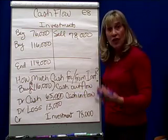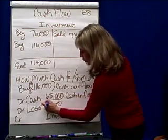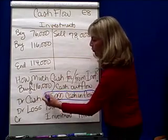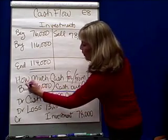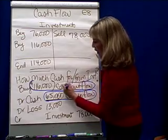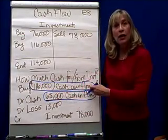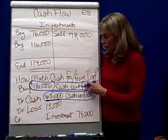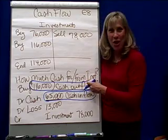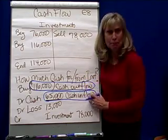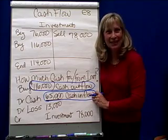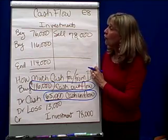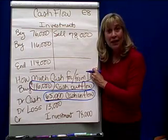So when we do the statement of cash flows, we're going to show $65,000 as a cash inflow, and we're going to show $116,000 as a cash outflow, as far as our investing activities are concerned. Cash in, cash out — more cash is going out than coming in. So the next thing we're going to look at is plant assets, which also impacts the investing section.